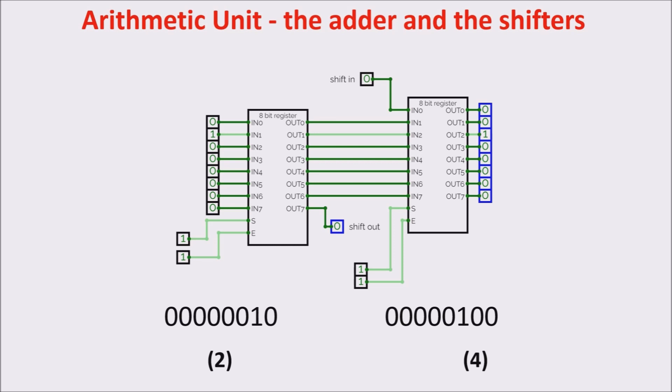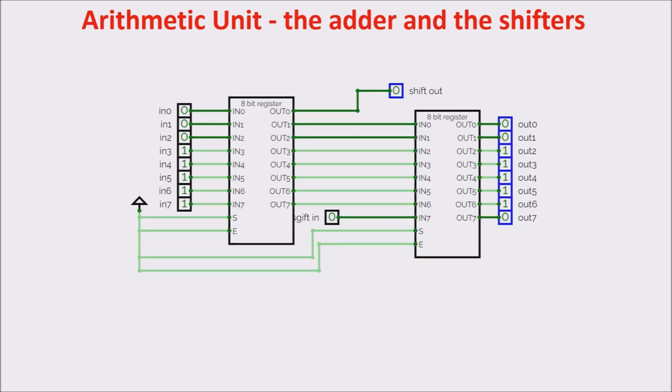Here you can see the right shifter. The byte 11111000 is right shifted to 01111100. Note that the starting byte corresponds to the decimal number 248, and the shifted one to the number 124. So, right shifting of one position is like dividing by 2, and shifting of two positions is like dividing by 4, and so on. Shifter is important in divisions. Note that we also have the carry here.